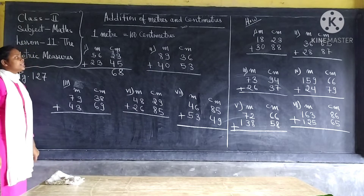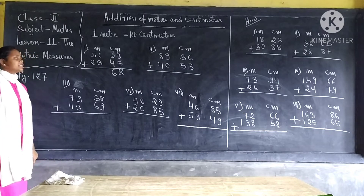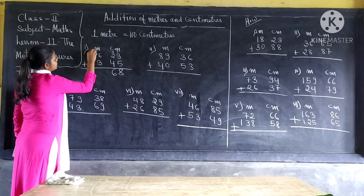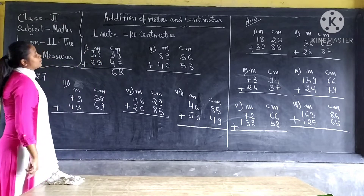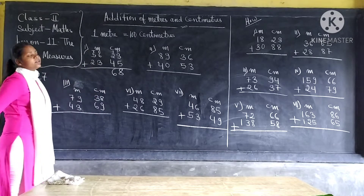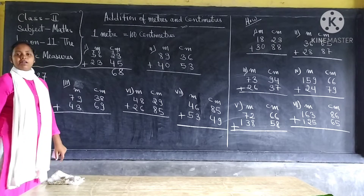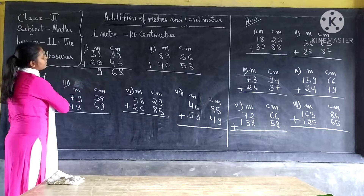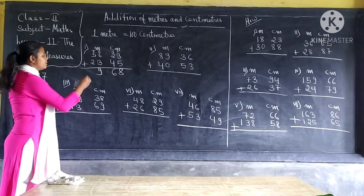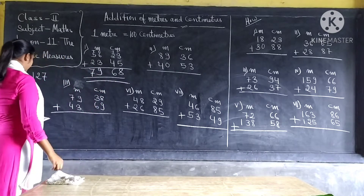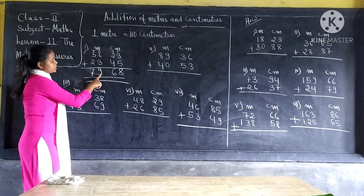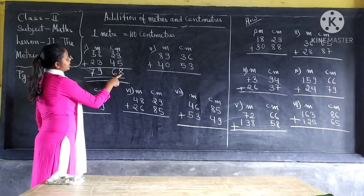Now, under the meter, we have fifty-six plus twenty-three. Here also, just for your knowledge, think of it as tens and ones. Under ones, we have six ones and three ones. Six plus three equal to nine. So nine will come here. And under tens, we have five tens and two tens. Five plus two equal to seven. So our answer is seventy-nine meters and sixty-eight centimeters.